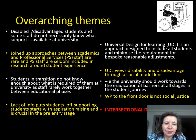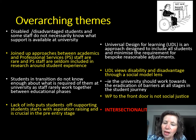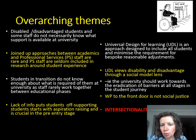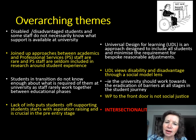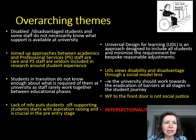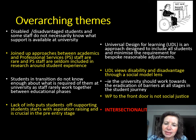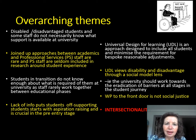Some overarching themes: disabled and disadvantaged students and some staff don't necessarily know what support is available at university. Presenting to staff — listing things like library support, skills for learning, disability support, mental health support — university academic staff were saying they didn't realise that was available. That's because nobody really put it into the induction for staff. It's as if they're supposed to imbibe this knowledge through a process of osmosis, or disability services and other professionals run round trying to make sure everybody knows. This comes right back to joined up thinking and senior leadership.